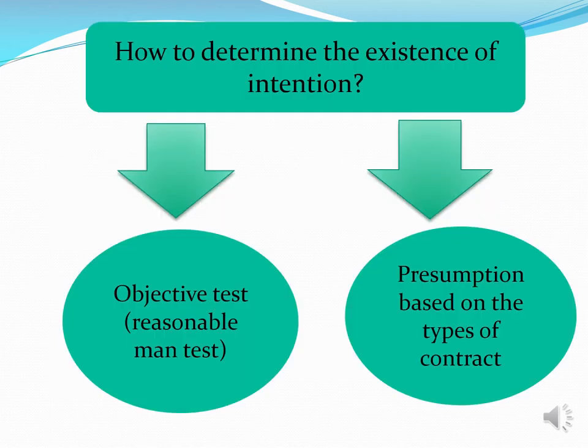To determine the existence of intention, we have to refer to two elements. First, the objective test — also called the reasonable man test. Second, presumption based on the type of contract. You must remember these two ways to determine whether intention exists.